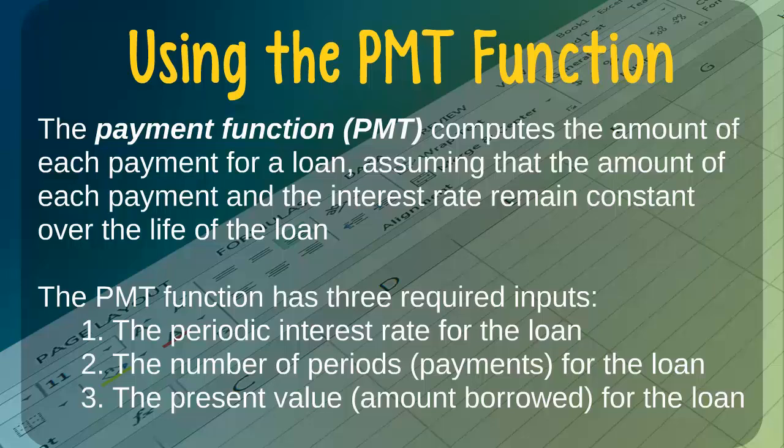To use the payment function, we need to provide Excel with three different pieces of information. The first required input is the periodic interest rate, which we can think of as the interest rate associated with each payment for the loan. For example, if the annual interest rate for the loan is 6% and we are making one payment each month, or 12 payments per year, then the periodic interest rate would be equal to 6% divided by 12, or 0.5% per payment.